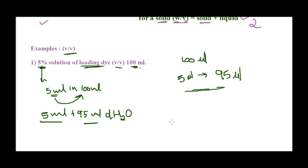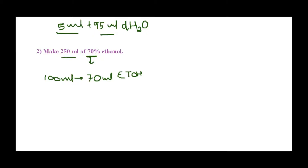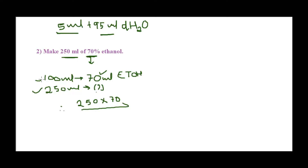Let's take a slightly more complex example — one commonly needed in the lab. How do we prepare 250 ml of 70% ethanol? The concentration needed is 70%. Remember, percentage is always per 100 ml, so for 100 ml I would take 70 ml of ethanol. But here I need 250 ml, so how much ethanol do I need?